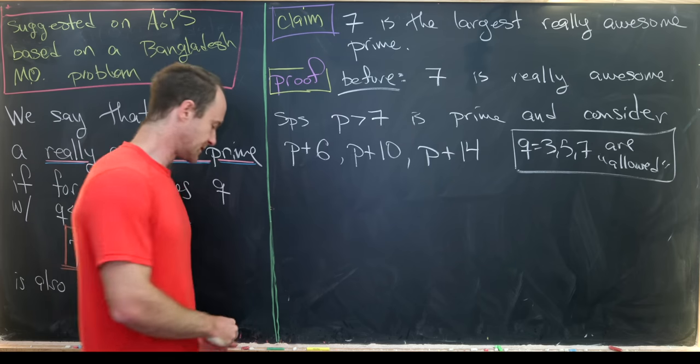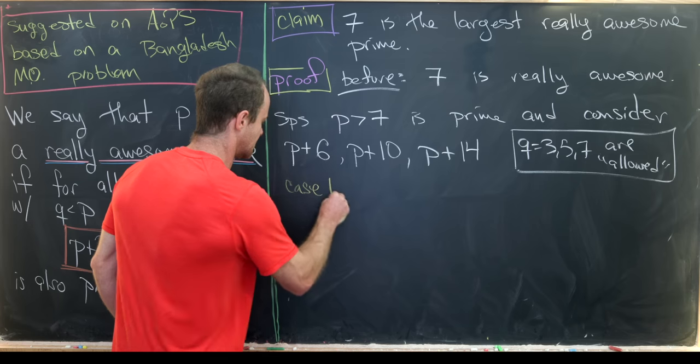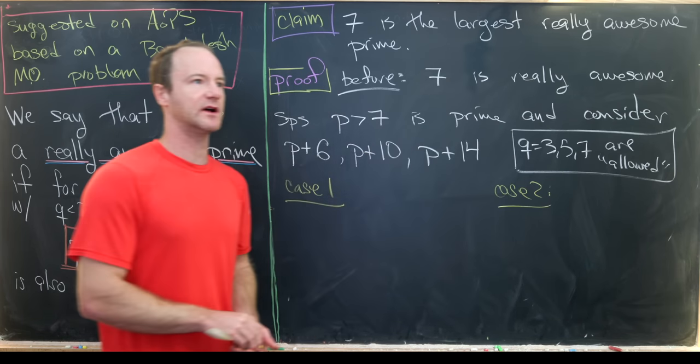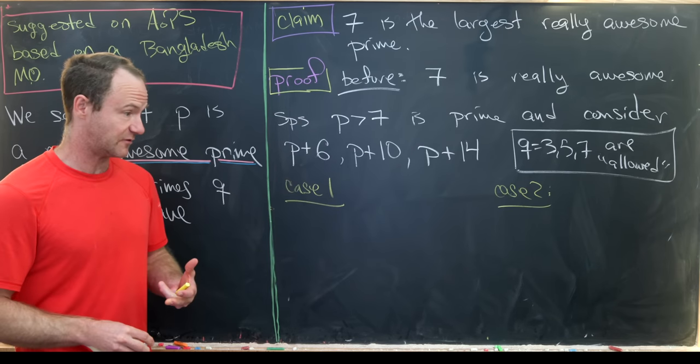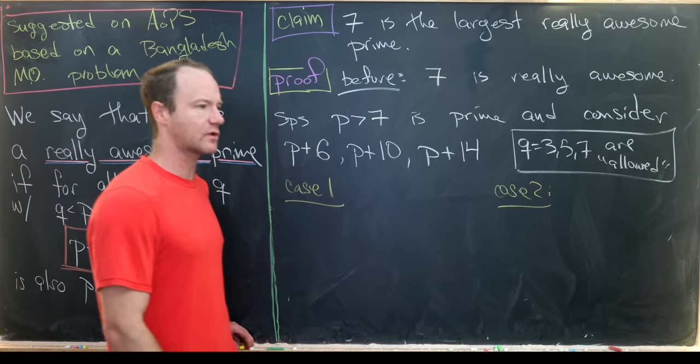And now we're going to break this into two cases. Case 1 and case 2. And those will deal with not quite the parity of p, but the remainder of p when dividing by 3, in other words the residue class of p mod 3.